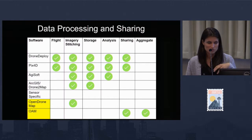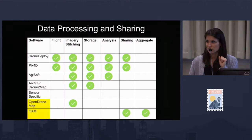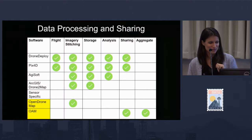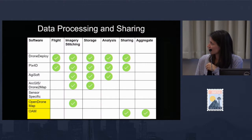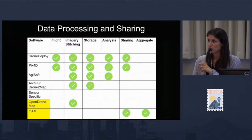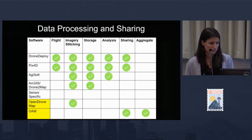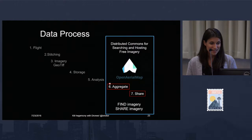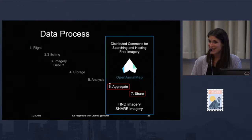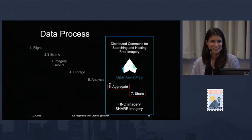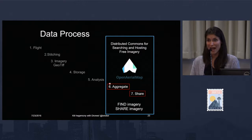To do each one of these steps you need multiple different people or multiple different software systems. I took a random sample of software required for each step and highlighted the open source ones. We have Open Drone Map. You'll notice there's only one platform focusing on sharing and aggregation, which is so important to our open source community — and that is Open Aerial Map. Has anyone used Open Aerial Map before? If you need any imagery or have any imagery to contribute, I highly recommend checking it out.